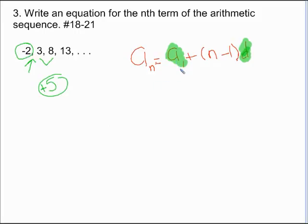So a sub 1 is negative 2. The common difference is 5. So our entire formula is a sub n equals negative 2 plus...